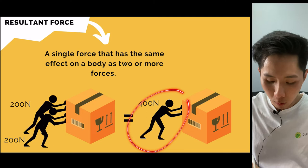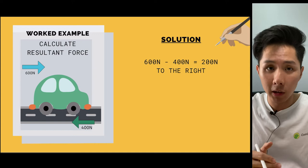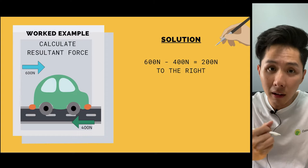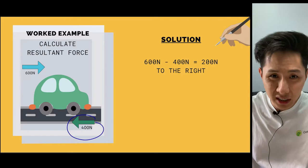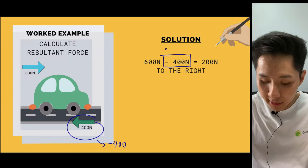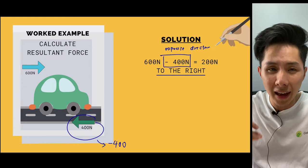Here's a worked example showing what happens when two forces act in opposite directions. The engine exerts 600 Newton to move the car, and friction exerts 400 Newton towards the left. To calculate the resultant force, we assign one direction as negative: 600 minus 400 equals 200 Newton to the right. Understanding resultant force is important for many applications and questions.